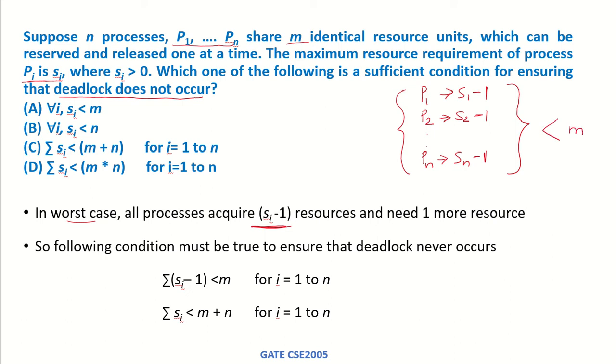What if it was equal to m? If the sum of all these allocated resources was equal to m, then that means there are no additional resources left to be given to these processes and the system would be in a deadlock.